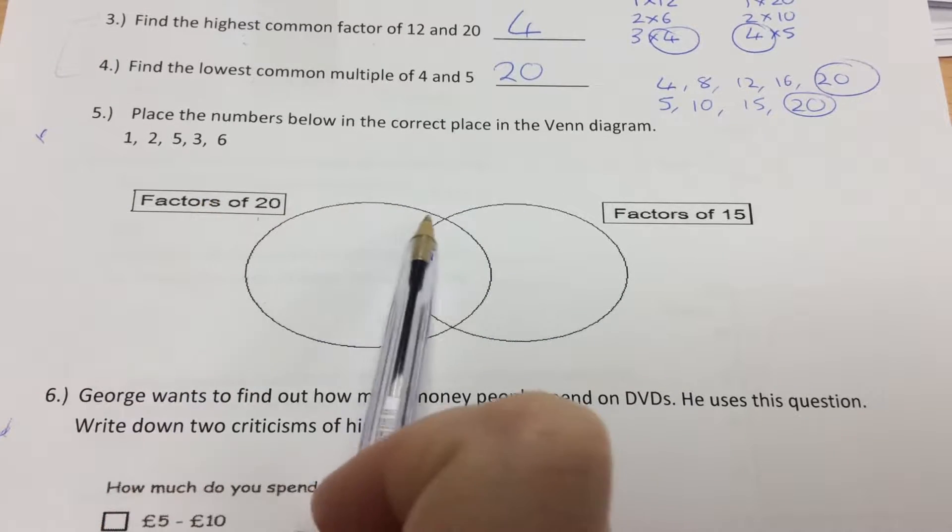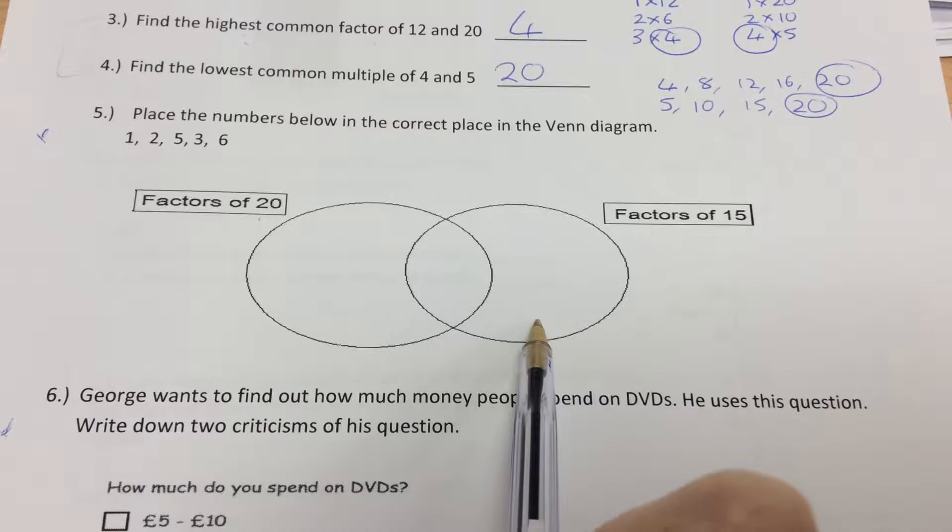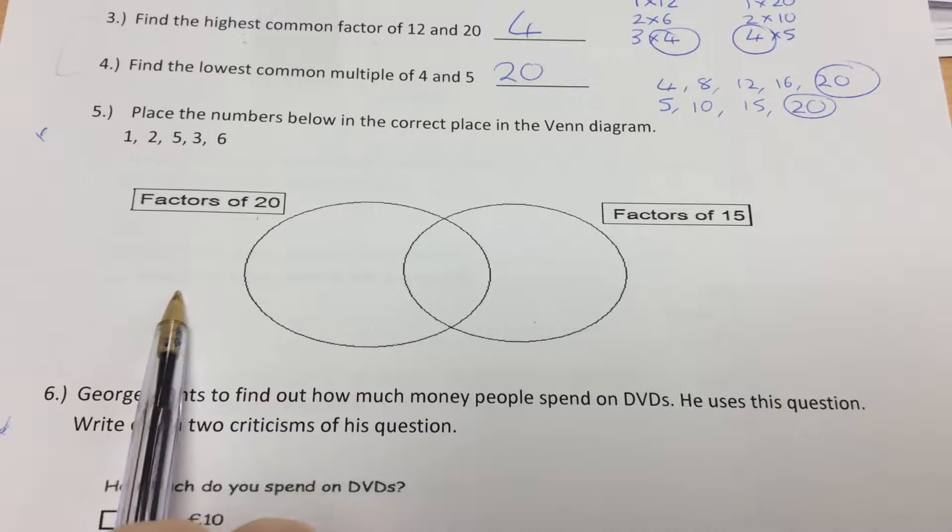If it's only a factor of 20, it would go in this part. If it's only a factor of 15, it would go in this part. If it's neither, we put it on the outside.